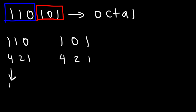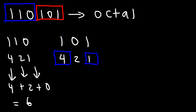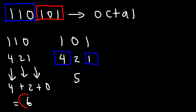So one times four is four, one times two is two, zero times one is zero. Adding four and two gives us six. For the second group, one times four is four and one times one is one, so that adds up to five. Our answer is sixty-five.